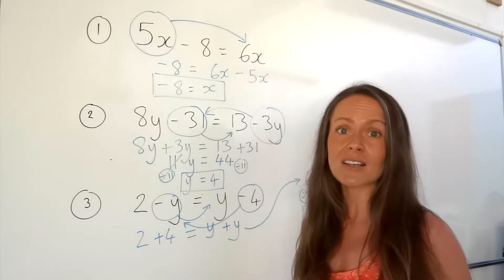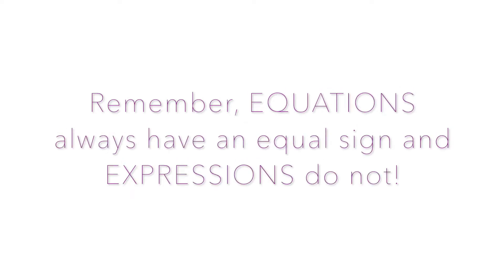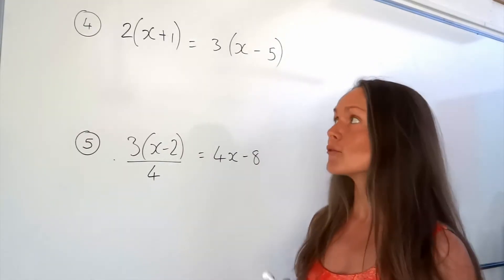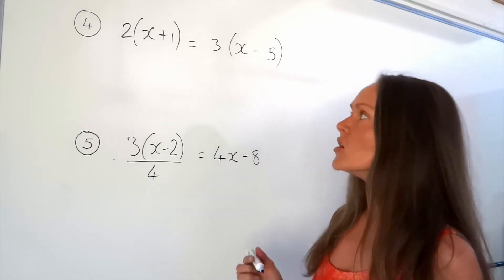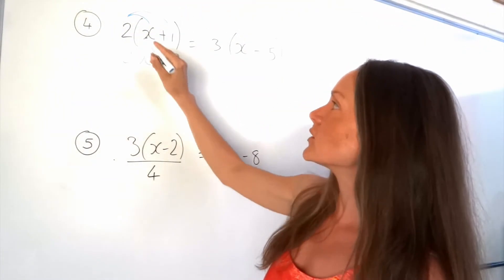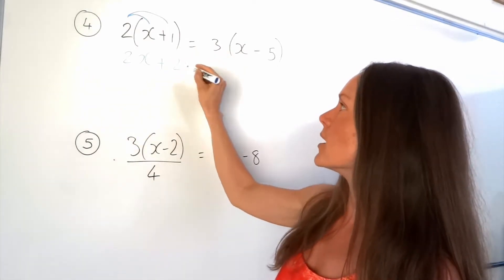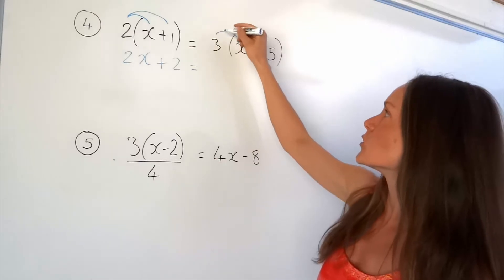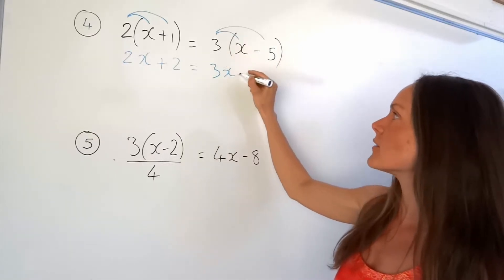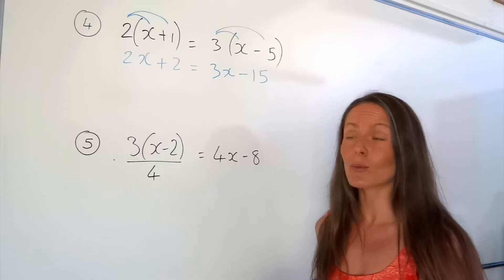Now I'm going to find some harder linear equations for us to have a go at. On to example number 4. The first thing I need to do is get rid of the brackets. When you see brackets, it means multiply. So you have to multiply all of this bracket by 2. So 2 multiplied by x is 2x, and 2 multiplied by 1 is just positive 2. Now do exactly the same thing with this other bracket — multiply it by 3. So 3 multiplied by x is 3x, and 3 multiplied by negative 5 is negative 15.